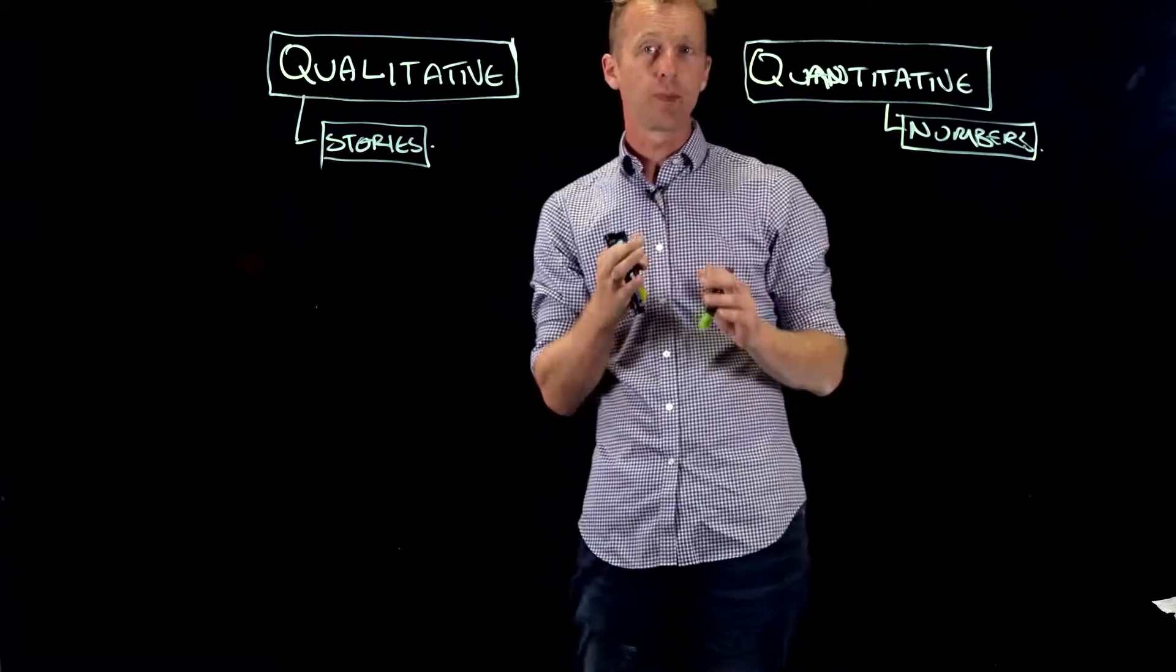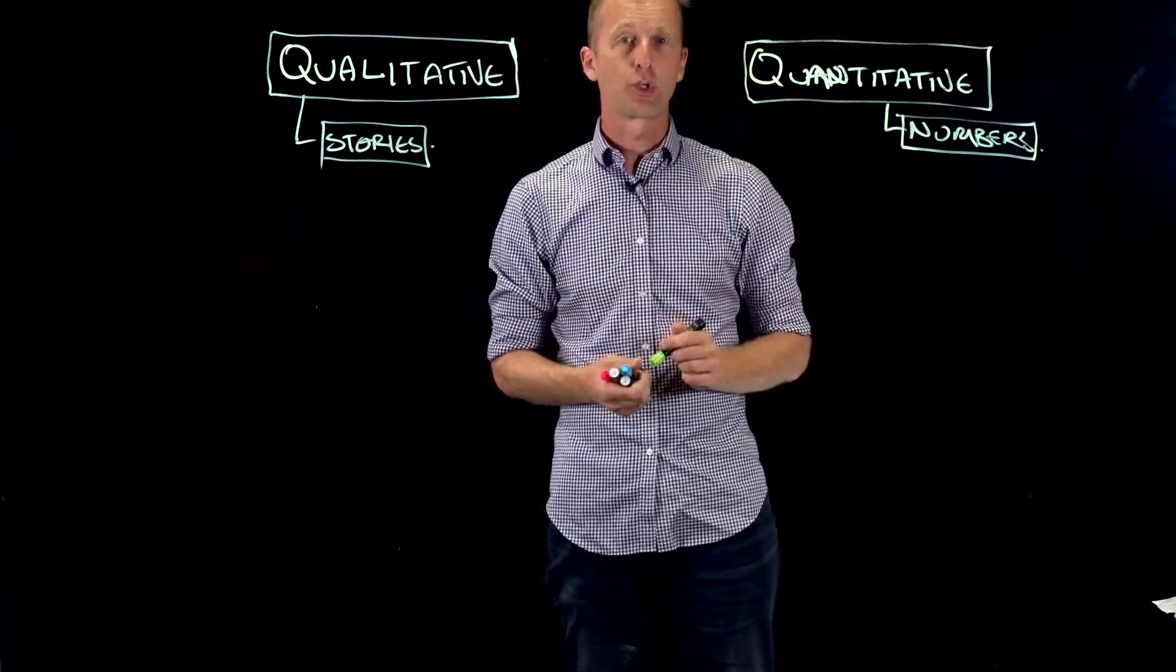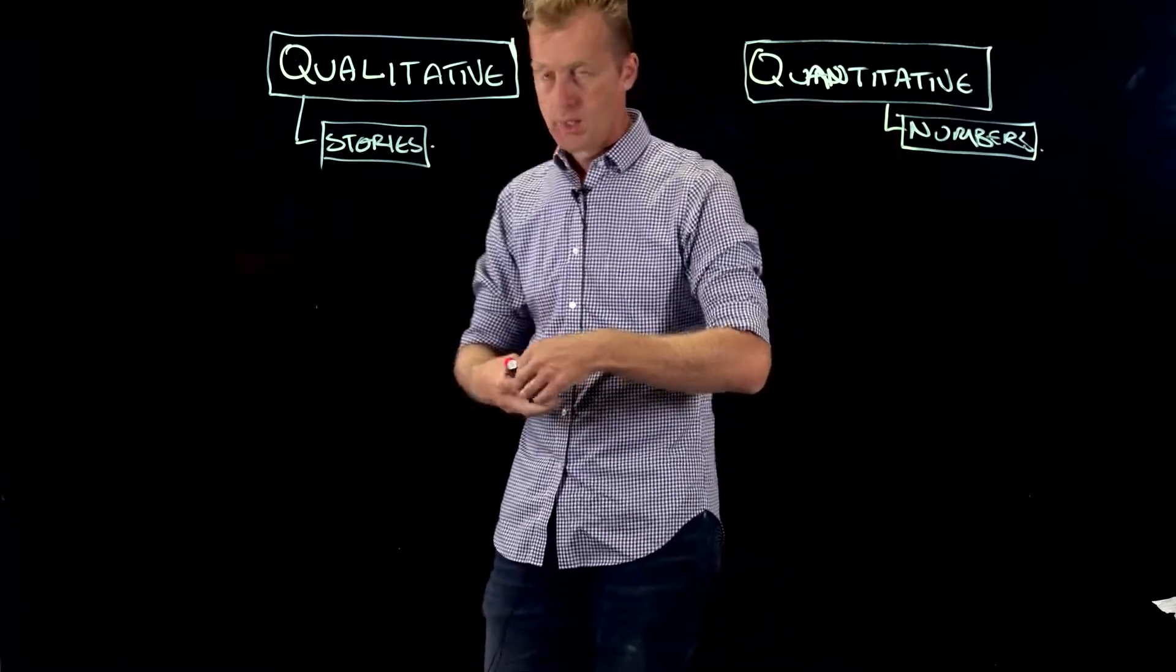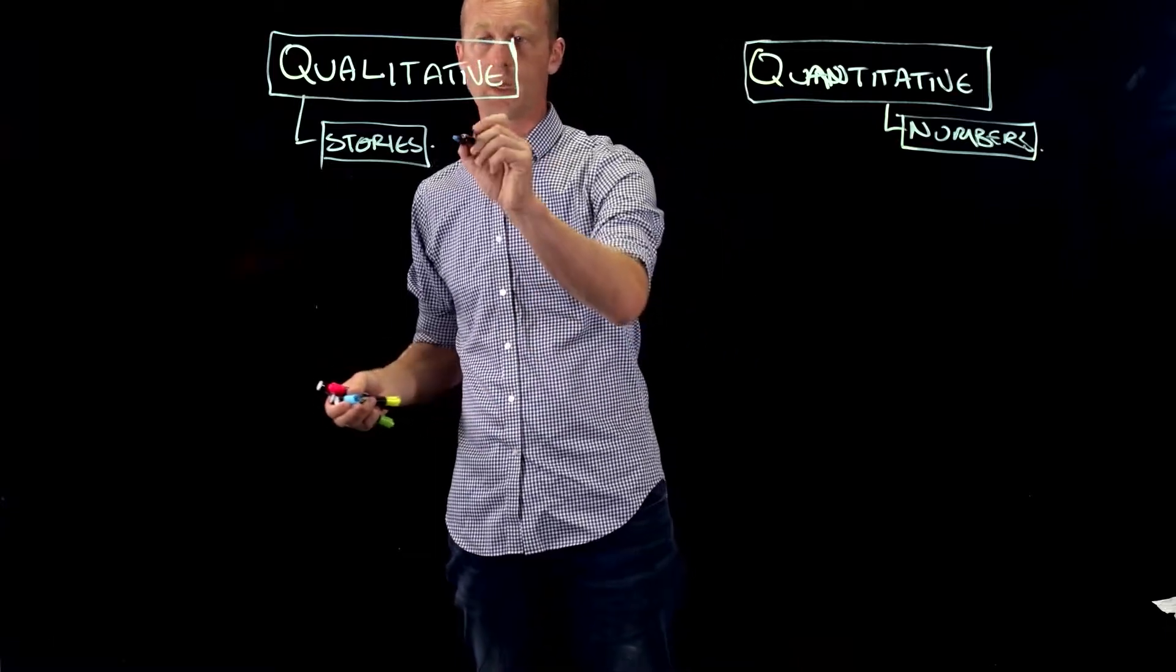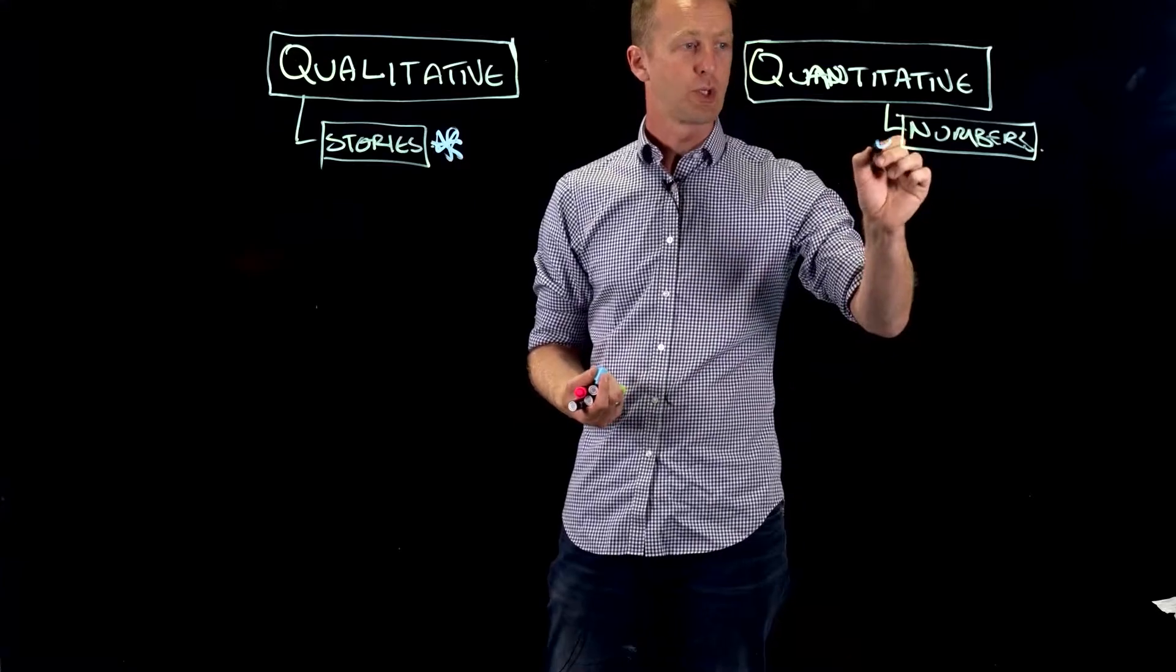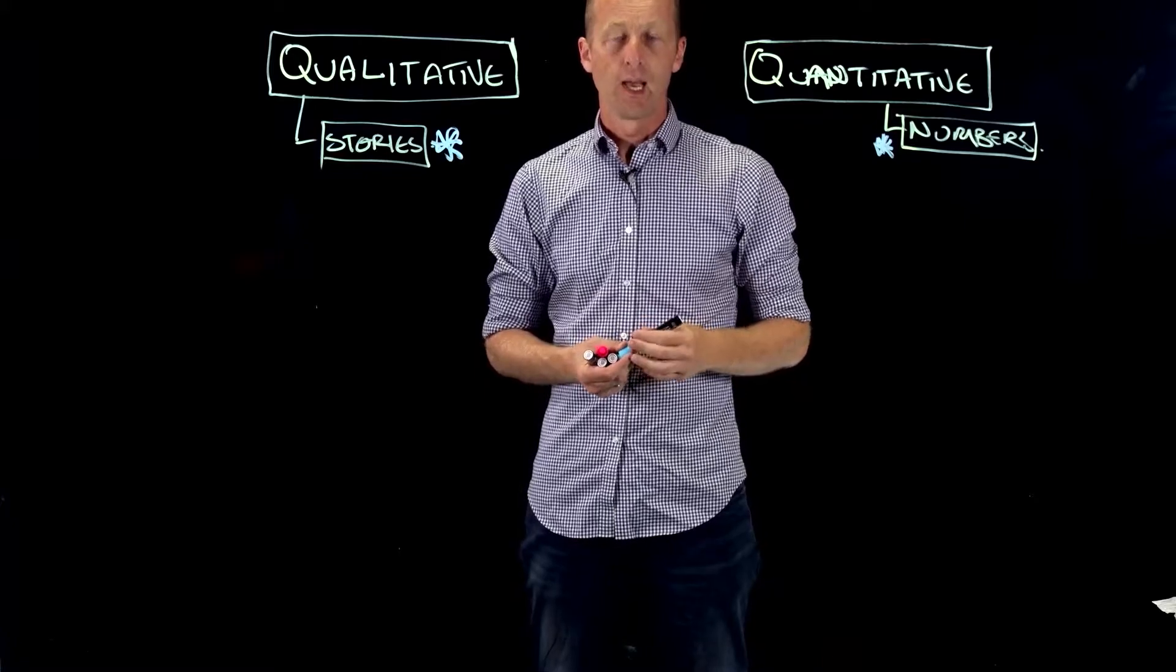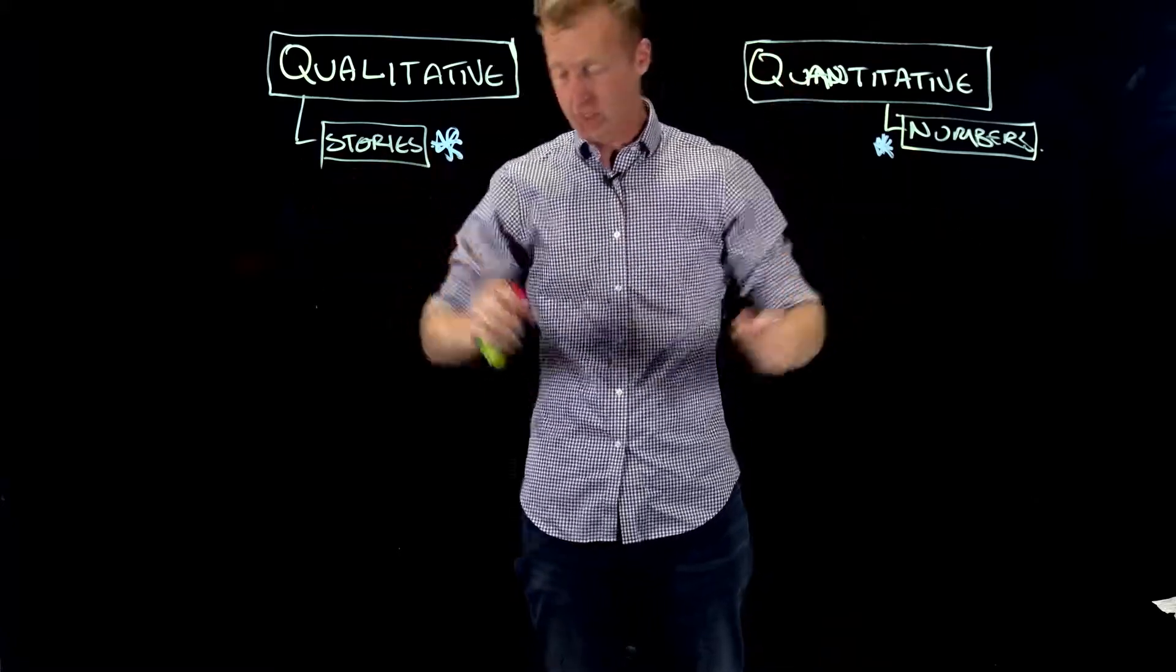So when you're thinking about your evaluation strategy, and we're going to get to a couple of examples in a minute, think about whether you're trying to find out the story. Are you trying to find out the story, or are you trying to find out the more numbers, the more outcomes-based stuff? And then that kind of helps you as to which direction you go into.